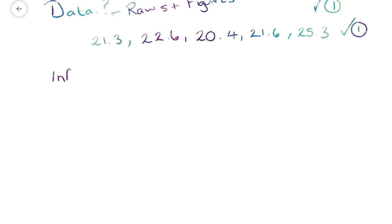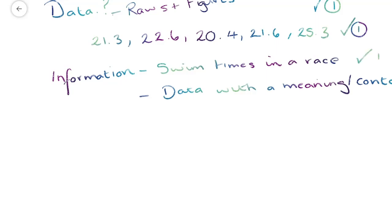So the next part is information. Information is where we actually give those values a context. So if I said these are swim times in a race, I have now given it a context. So that's data with a meaning or context. There's your one mark for your example and your one mark for your definition.